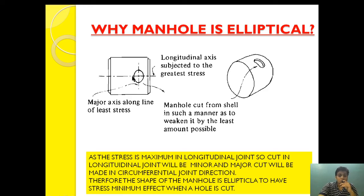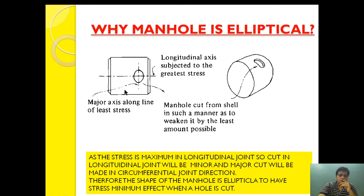To avoid crack development or to avoid larger stress acting on a boiler shell, the doors are cut elliptical. The major axis is in the circumferential direction and the minor axis is in the longitudinal direction. Since the stress is maximum in the longitudinal joint, the cut in the longitudinal joint direction will be minor, and the major cut will be made in the circumferential joint direction.